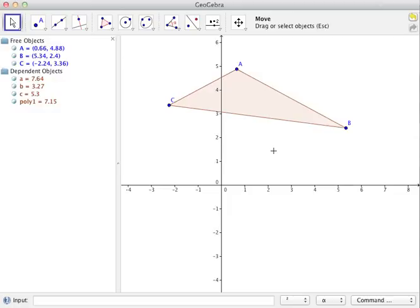The next step is to find what's called the in-center of the triangle, and the in-center can be found by constructing the three angle bisectors.